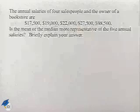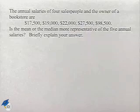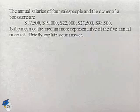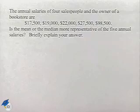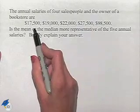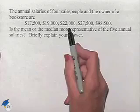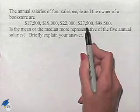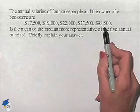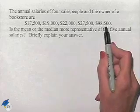Now let's look at an application where we look at our measures of central tendency. The annual salaries of four salespeople and the owner of a bookstore are $17,500, $19,000, $22,000, $27,500, and $98,500. You can expect the owner of the bookstore must be this last value.